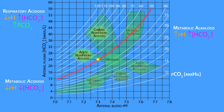The body will compensate by increasing plasma bicarbonate concentration from 24 to about 26 millimoles per liter, which is referred to as acute respiratory acidosis. However, if the PCO2 remains elevated, the body will compensate even more by increasing the plasma bicarbonate concentration to about 30 millimoles per liter. This is referred to as chronic respiratory acidosis.